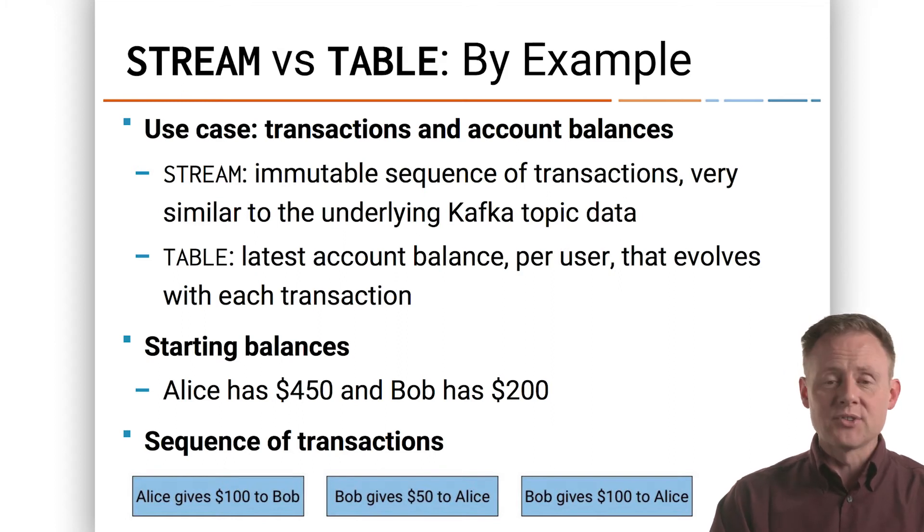A table is going to be the latest account balance per user. With every transaction, of course, those account balances are going to change. They're going to evolve as transactions happen. So the table will have the current state of the accounts. The stream will have the record of the transactions.